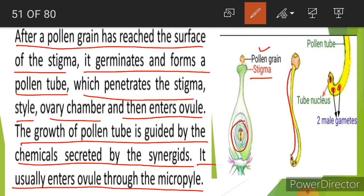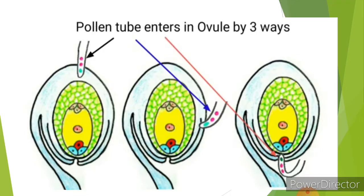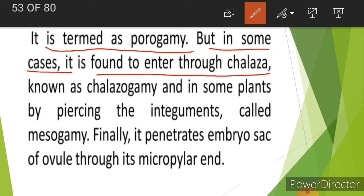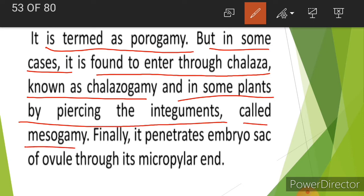The pollen tube usually enters the ovule through the micropyle — this is termed porogamy. However, the pollen tube can enter the ovule by three ways: through the micropyle (porogamy), through the chalaza (chalazogamy), or through the integuments (mesogamy).